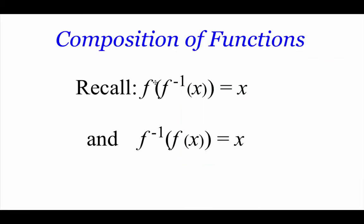Remember, if we take a function and do function composition with its inverse, then the answer we get back is just going to be whatever our x value was that we started with. So with this one, we've got f composed with the inverse of f of x, and all we get left over is that x value. We could also set this up the other way — the inverse of f composed with f of x — and we still get that same x value back.